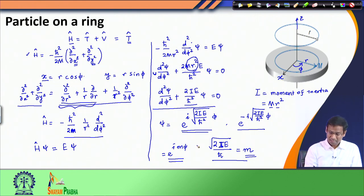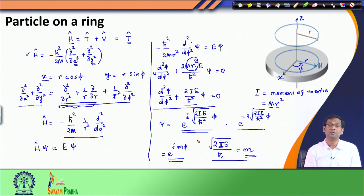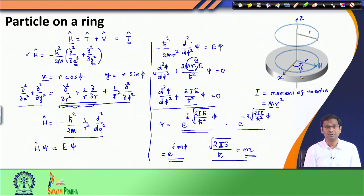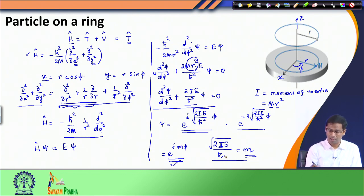Now, as in the particle in a box problem where we obtained a general solution and then imposed boundary conditions — where the boundary condition was that the wave function should be continuous at the boundary of the box — here we have to impose a boundary condition as well. When the particle makes a 2π revolution and comes back to its original position, the wave function should reproduce itself; the wave function should be single-valued. This means there should be a periodic nature in the wave function, and we will impose this condition to see the outcome.